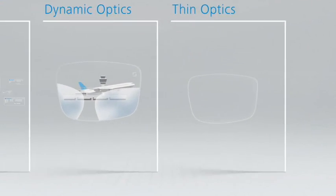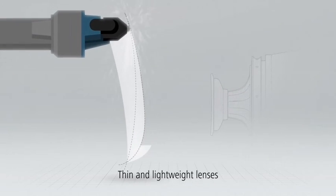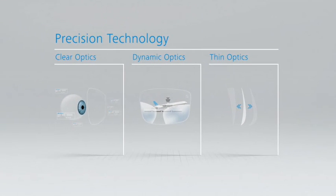Thin optics is the Zeiss promise of the best balance between optics and thin and lightweight lenses thanks to the modern Zeiss thickness optimization algorithm that makes the lens flatter and thinner. Clear optics, dynamic optics, and thin optics form the basis of the entire portfolio.